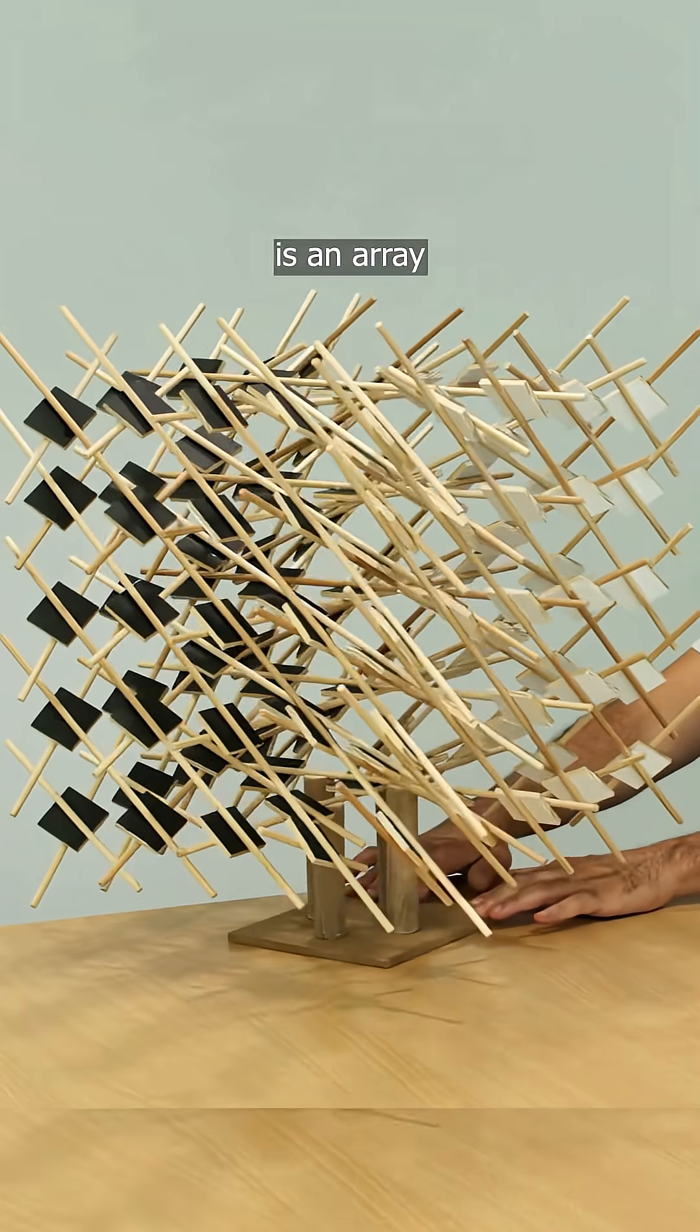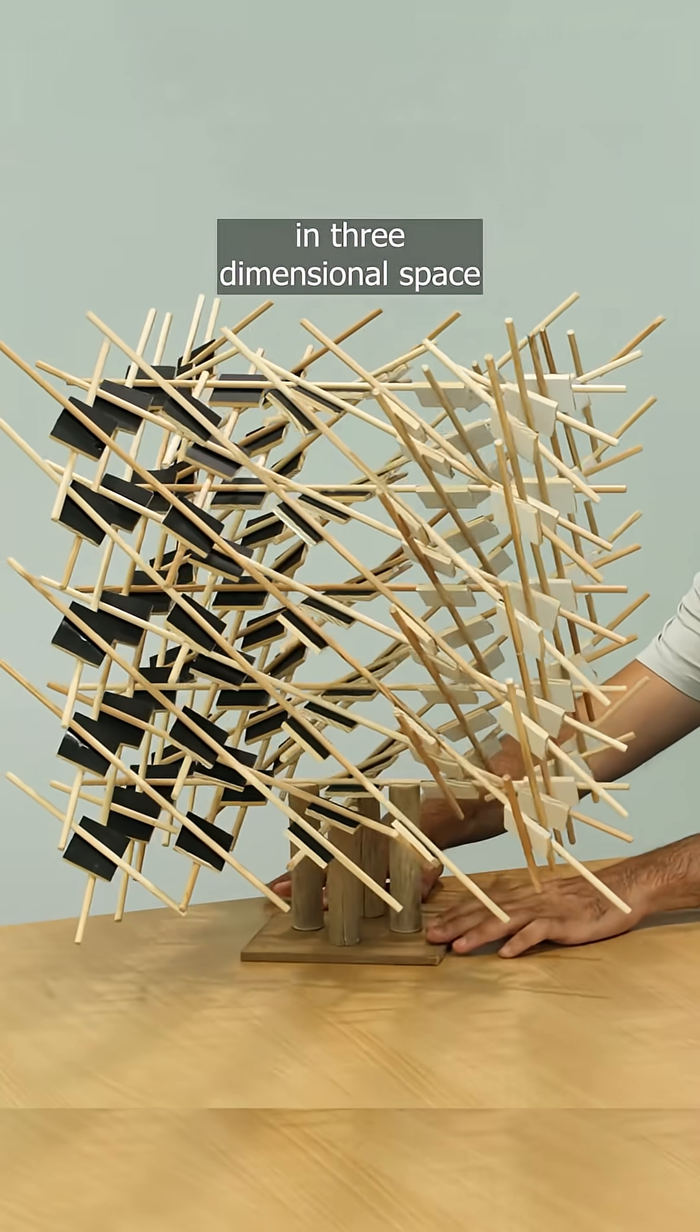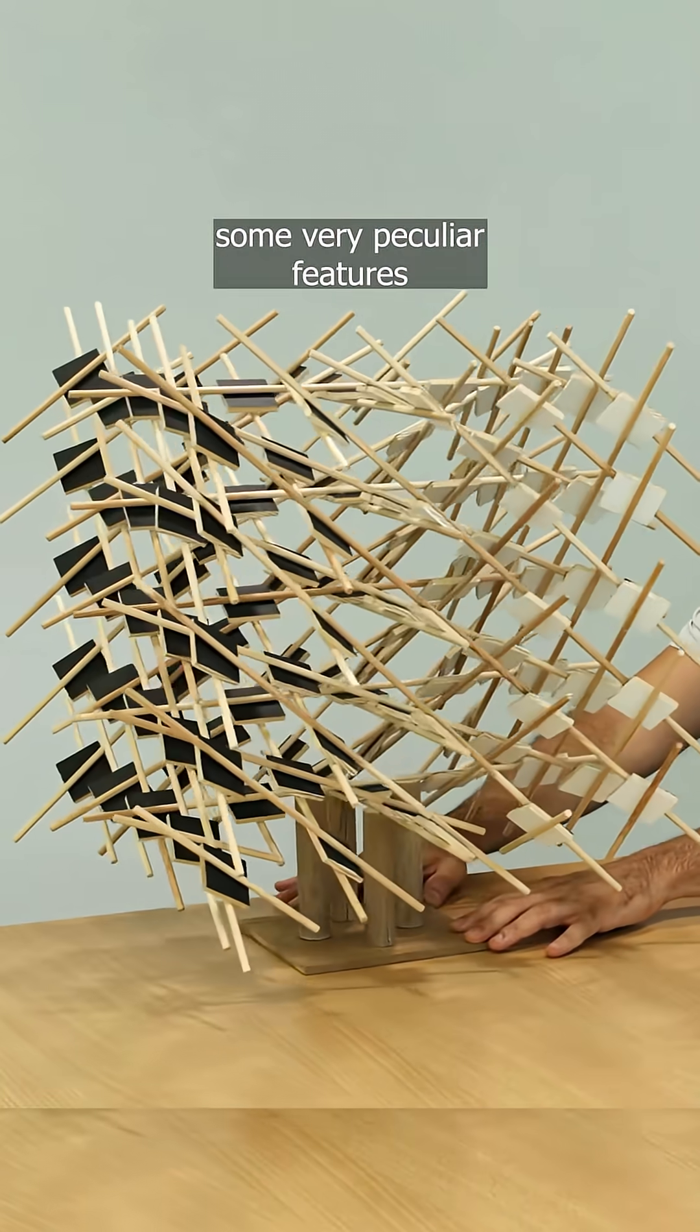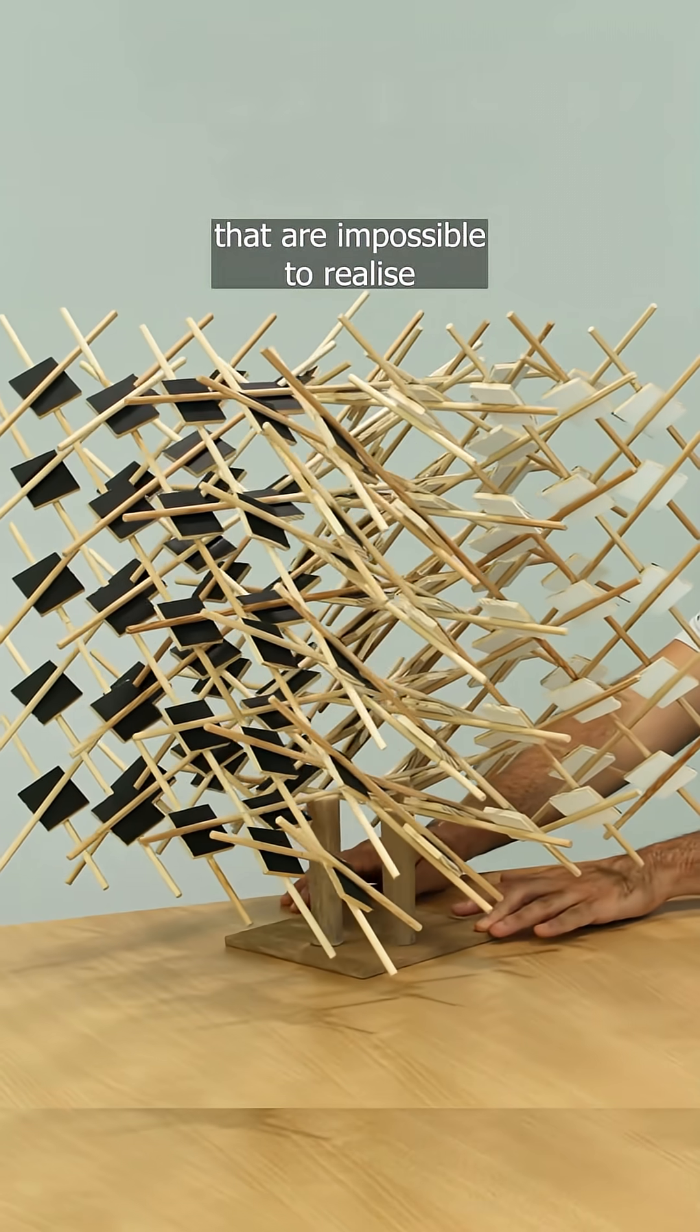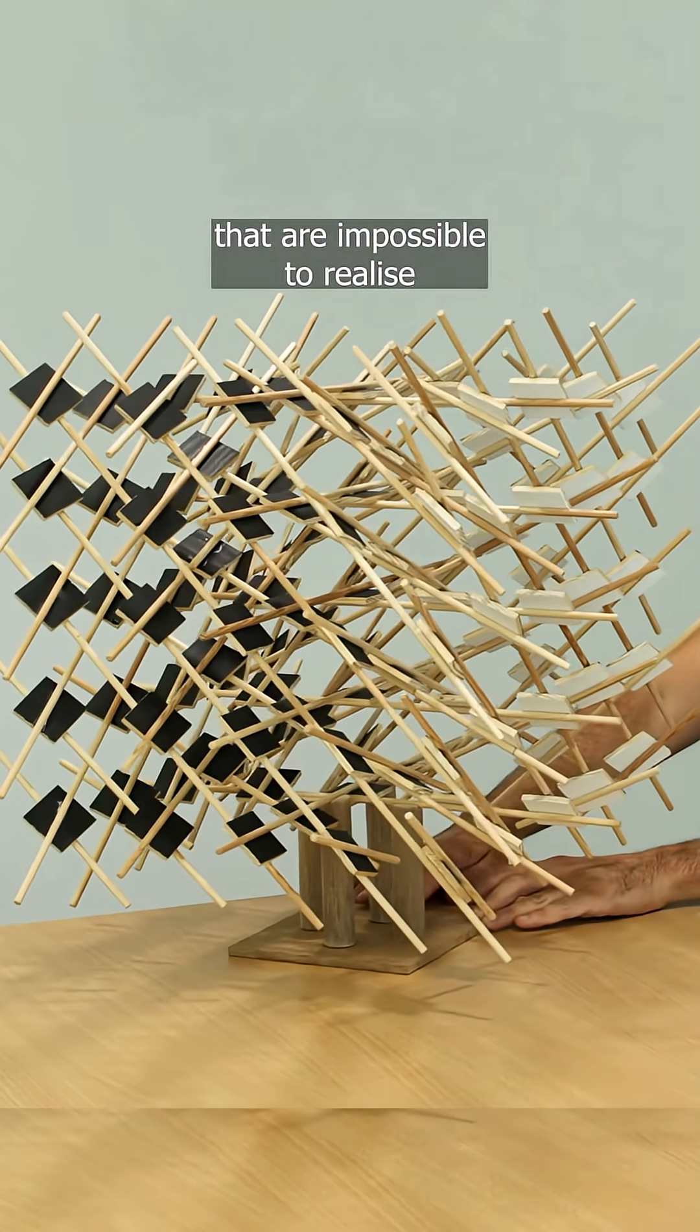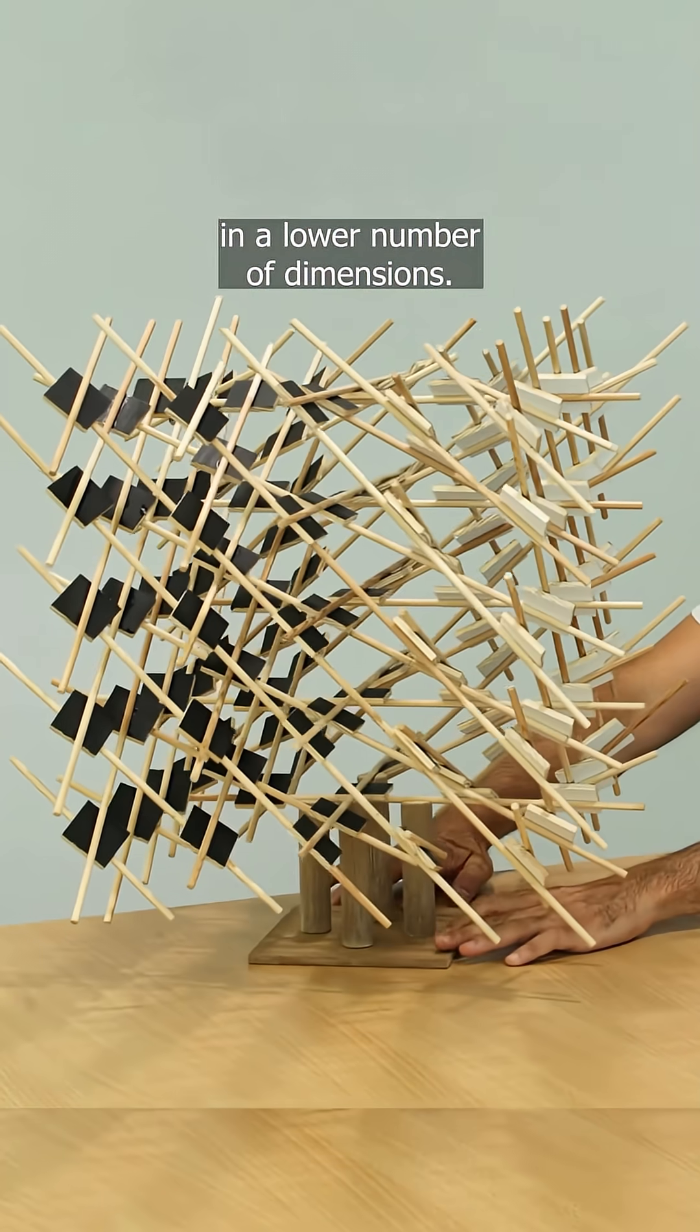A contact structure is an array of planes in three-dimensional space that exhibit some very peculiar features that are impossible to realize in a lower number of dimensions.